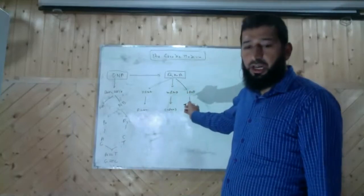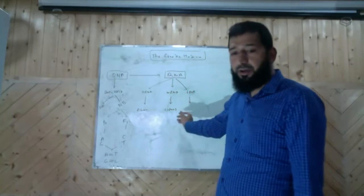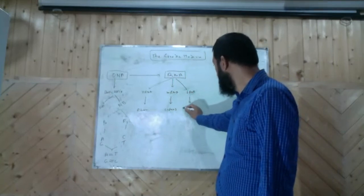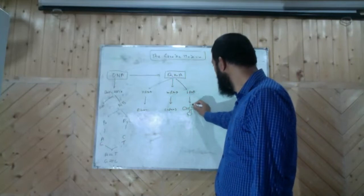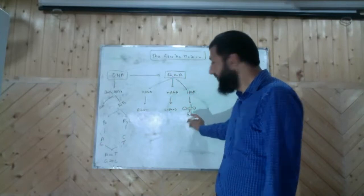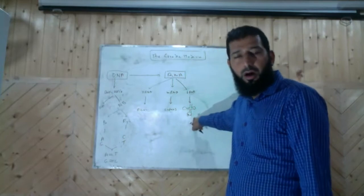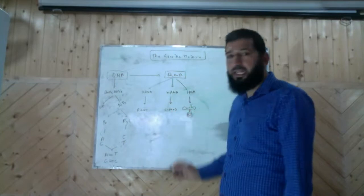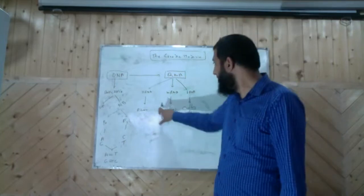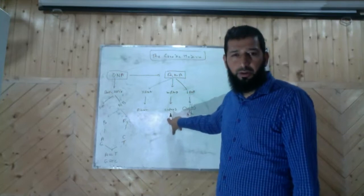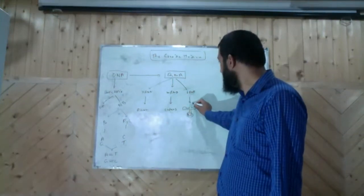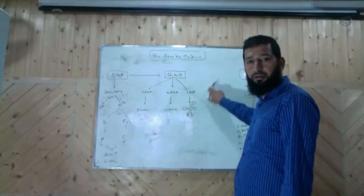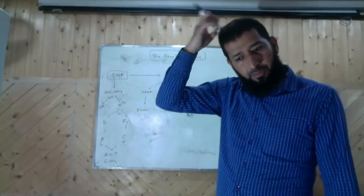These tRNAs are specific and they have an anticodon arm. This triplet anticodon is the same as the codon that's in your mRNA, and it pairs with it. This tRNA has an amino acid attached to it with the help of aminoacyl-tRNA synthetase, and this makes the protein chain with the help of ribosomes.